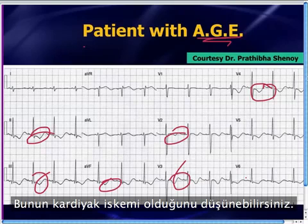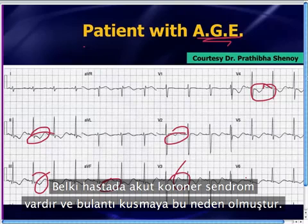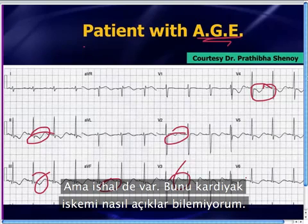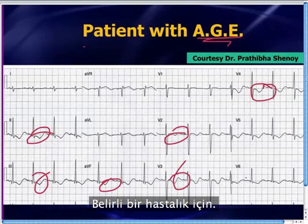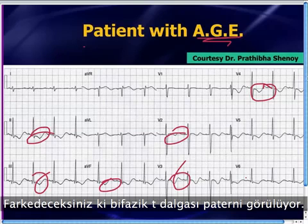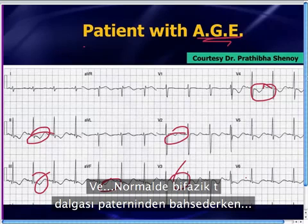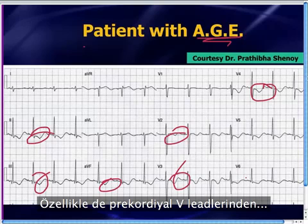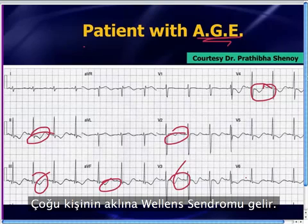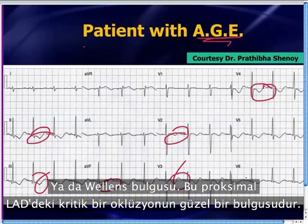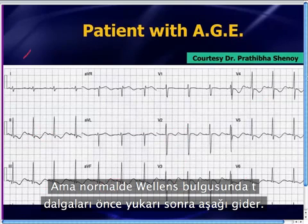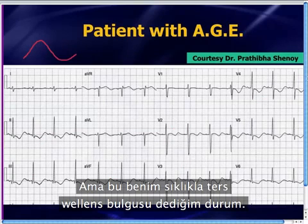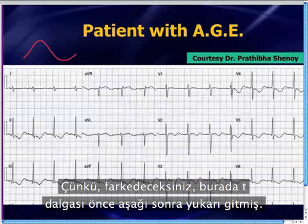You might be thinking that this is cardiac ischemia — maybe the patient's having acute coronary syndrome, causing the nausea and vomiting. Although if there's diarrhea also, I'm not sure how to explain that with cardiac ischemia. But actually, this T-wave pattern is very specific for a particular abnormality. You'll notice there's a biphasic T-wave pattern, not only in the limb leads but also in the precordial leads. When most people see a biphasic T-wave pattern especially in the precordial V leads, they think of Wellen's syndrome — a sign of proximal critical occlusion in the LAD. But normally with Wellen's sign, the T-waves go up and then down. This is something I refer to as the reverse Wellen's sign, because here the T-wave goes down and then up.